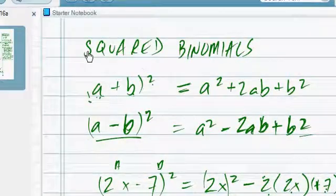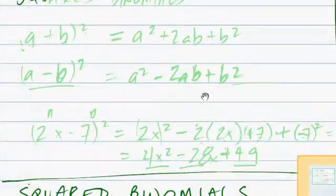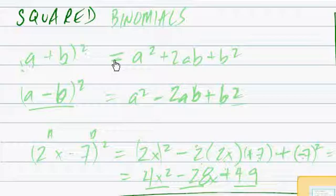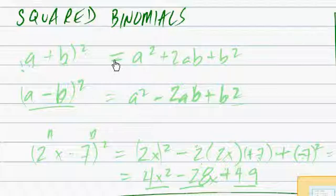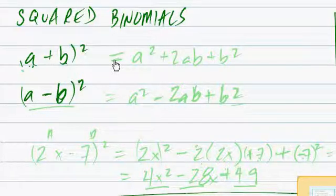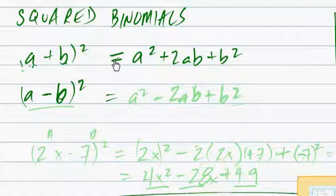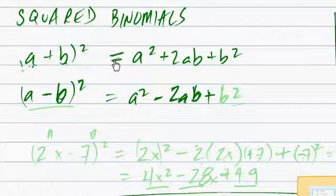Here it is. Squared binomials. You're going to have two different forms of this. You're going to have (a+b)² and you're going to have (a-b)². Now, the product of this is going to be a²+2ab+b², or a²-2ab+b².